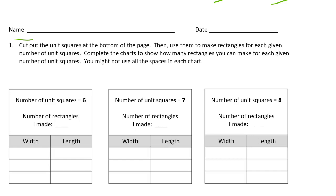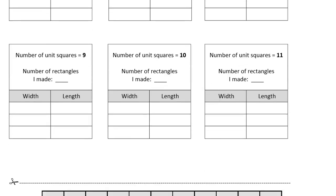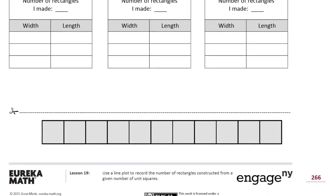Then use them to make rectangles for each given number of unit squares. Complete the charts to show how many rectangles you can make for each given number of unit squares. You might not use all the spaces in each chart. So that's kind of a lot to read and figure out, but these are the squares. You see the scissors down here, so cut these squares out and you're going to play with them like puzzle pieces.